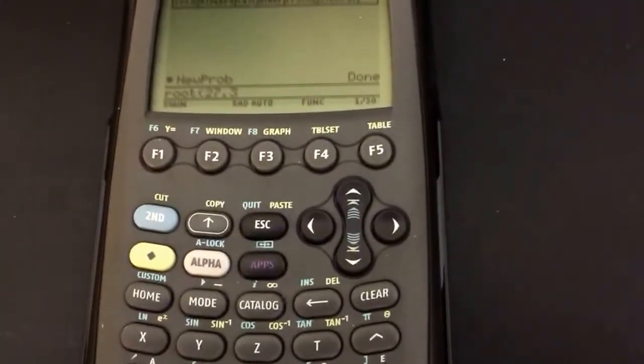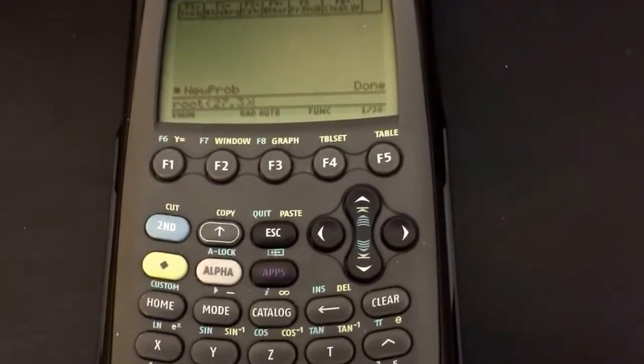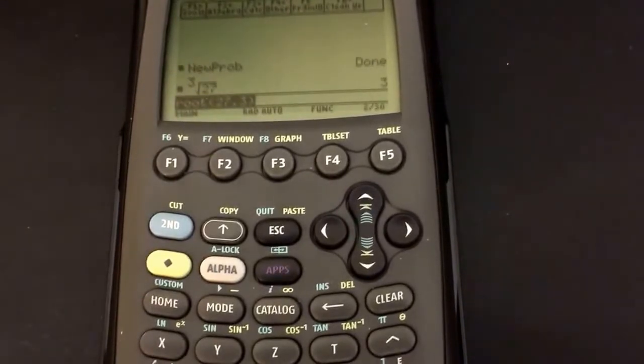So 27 is your radicand and 3 is your index and put that in and oh look cubed root of 27 is 3.